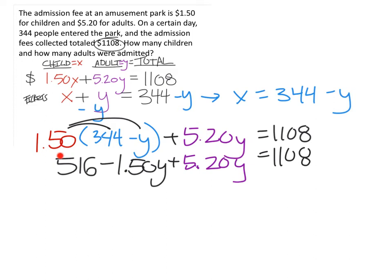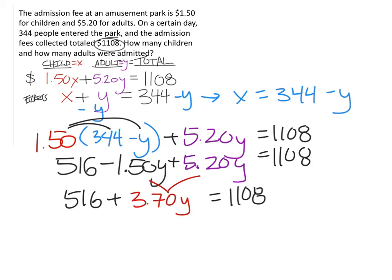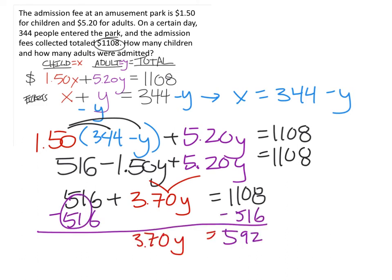I've rewritten the top equation, but instead of x I've used 344 minus y. Next, I distribute the 1.50, and from the distribution we get 516 minus 1.50y plus 5.20y equals 1,108. Combining like terms, negative 1.50y plus 5.20y gives us 3.70y, and the rest stays the same.